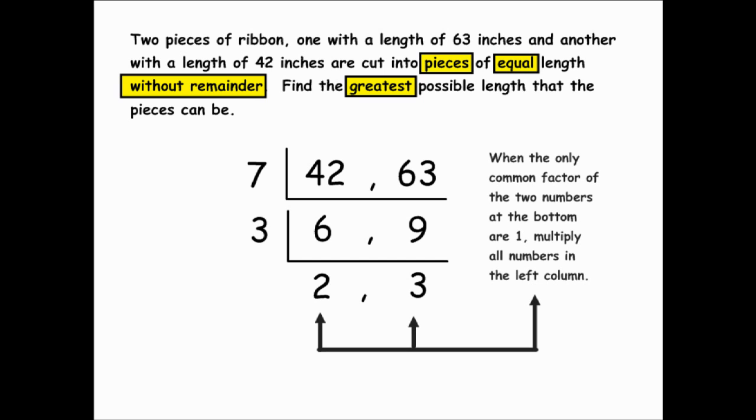When the numbers at the bottom share no other common factors other than the number 1, you are finished breaking down your numbers, and then you take the numbers you have written in the left-hand column and multiply those together, and that will give you the greatest common factor. In this case, we have 7 and 3 in our left-hand column, so when multiplying those together we have a product of 21.